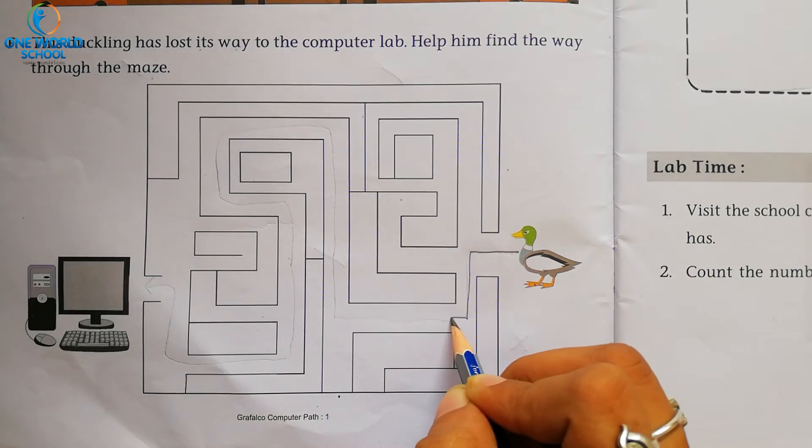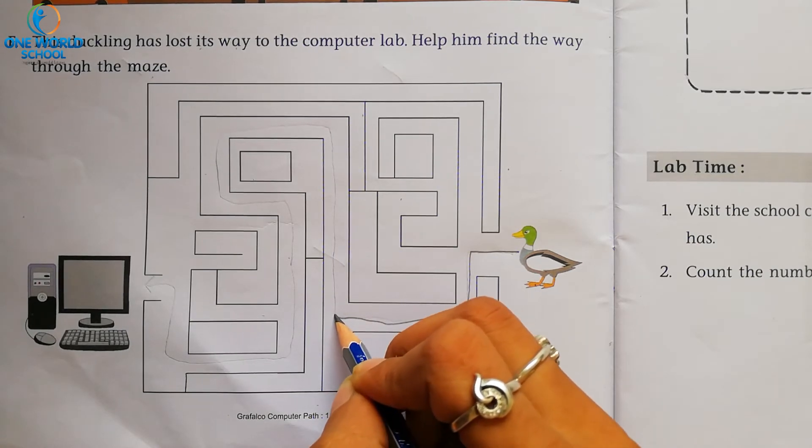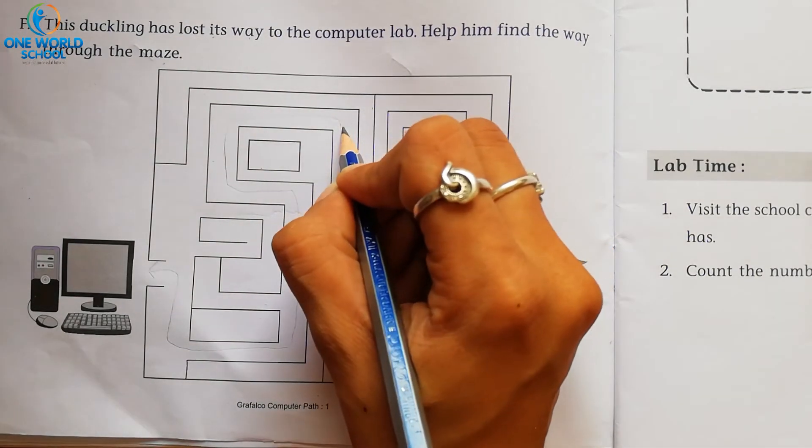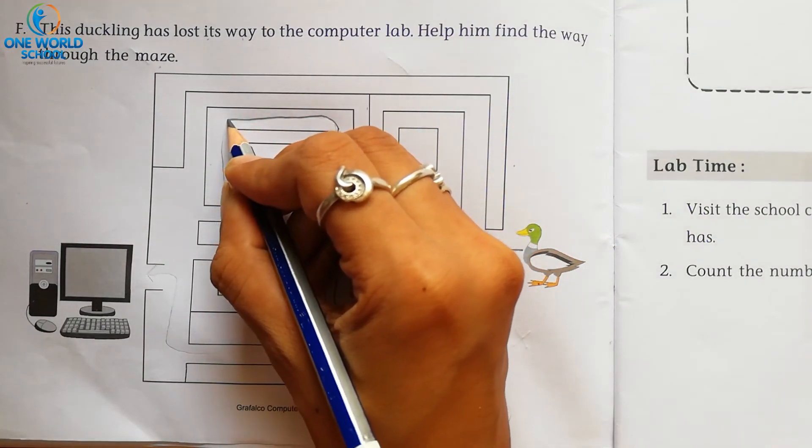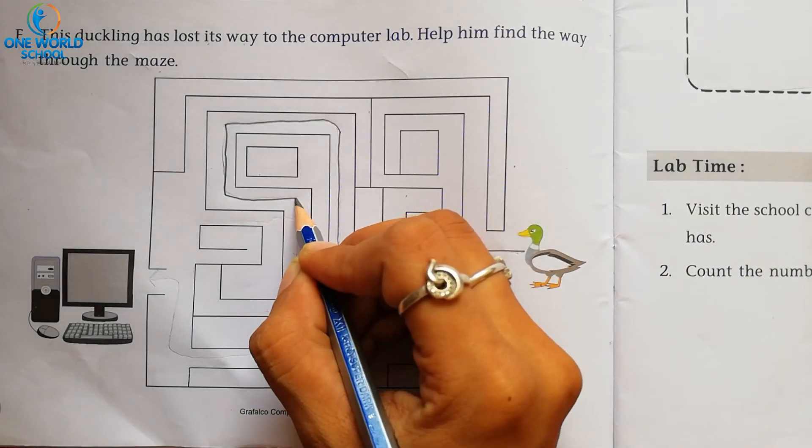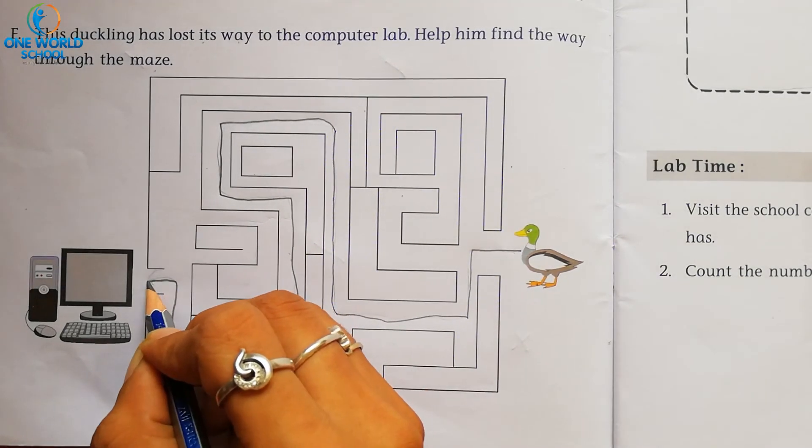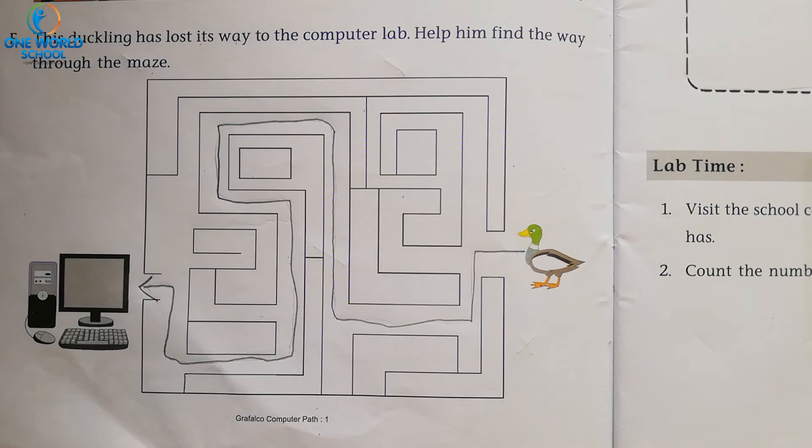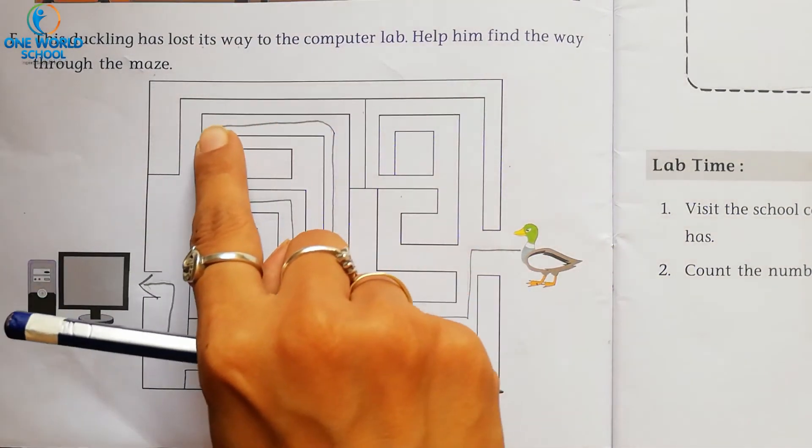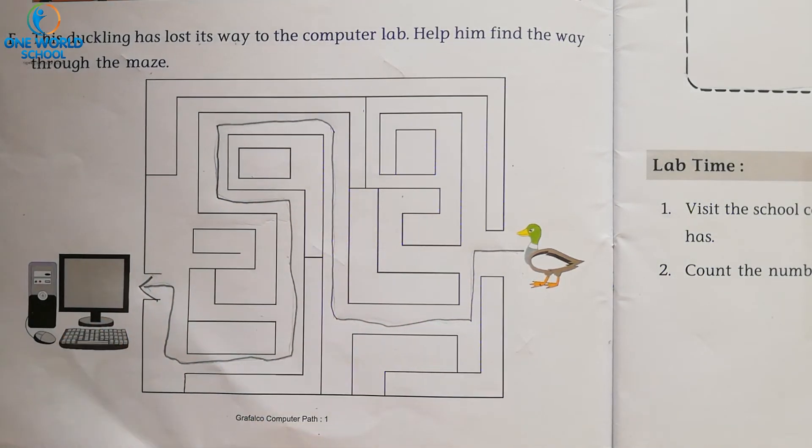नीचे जाएंगे. Then after. Yes we have to go left side. Now where we had going. Yes very good. Now upside we have to going. Then after. Left side. Then after. Down side. Right side. And then after. Down side again. And we have to find the way. हम को रास्ता मिल गया. So the duckling going this way. Here. Then after here. And then after here. The duckling has found out the way.